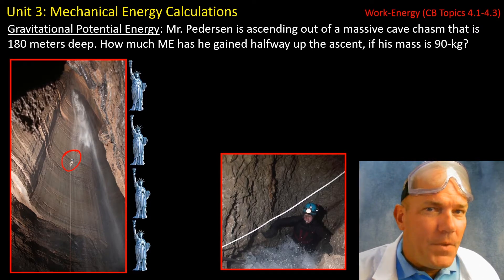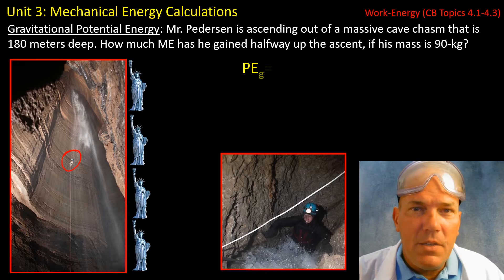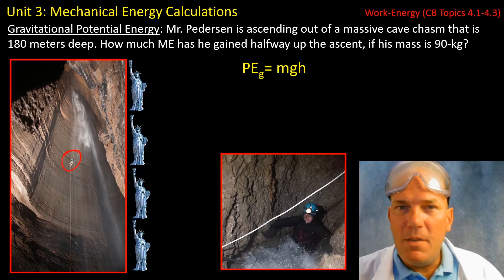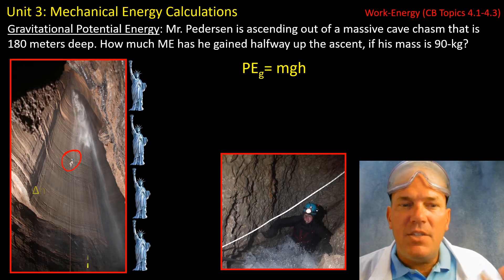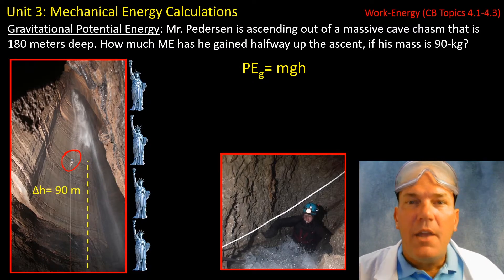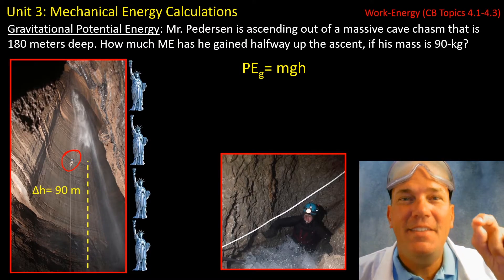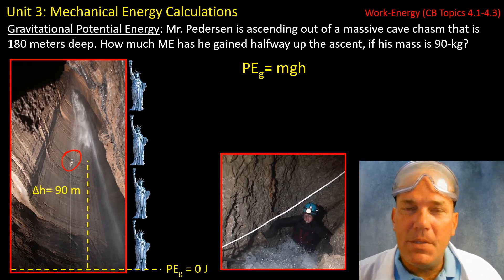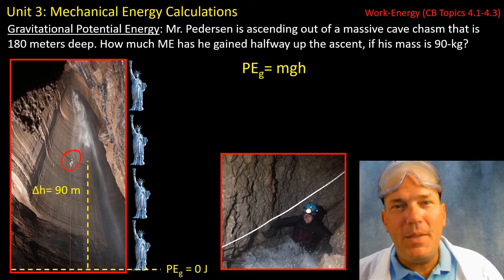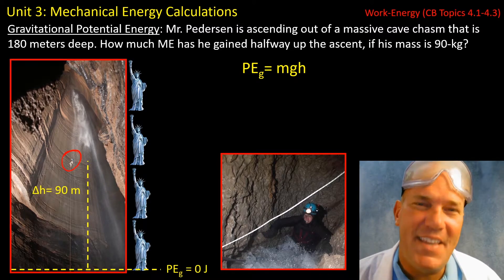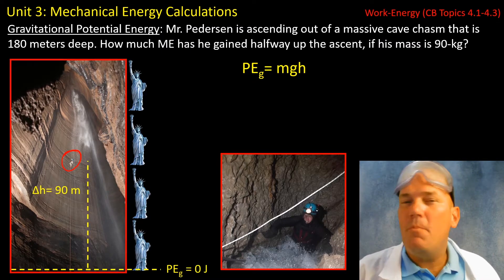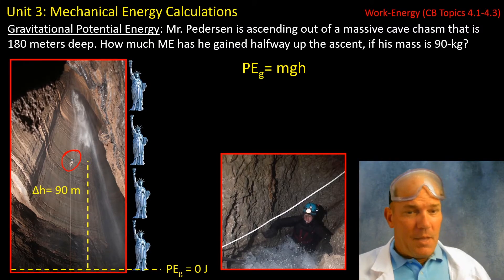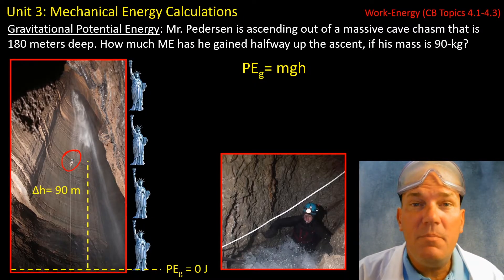So first things first, our equation for gravitational potential energy, mass multiplied by gravity, multiplied by the change in height. And that change in height here is 90 meters relative to a defined zero line. It's arbitrary. You choose where to put this zero line. And you want to try to think about it so it makes sense. So here, if you're asked about how much mechanical energy I gain from ascending from the bottom to halfway up, it makes sense to put the zero line at the bottom of the cave.